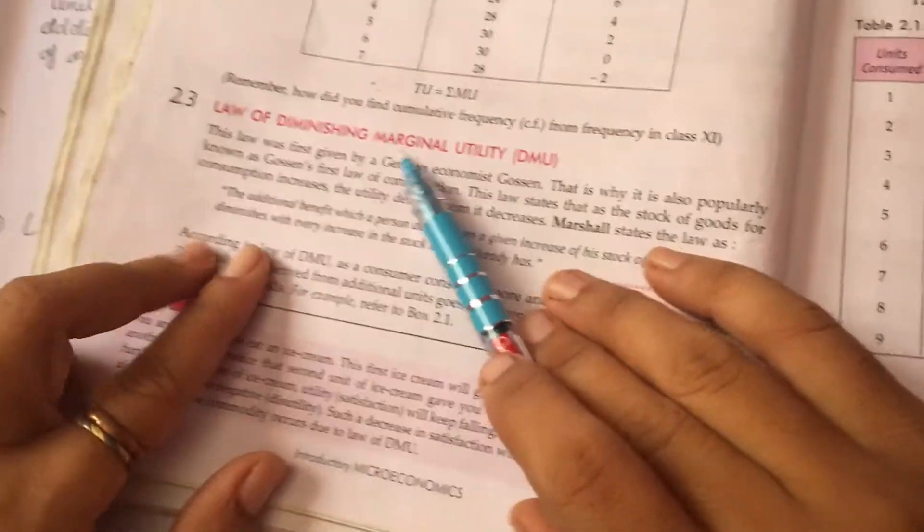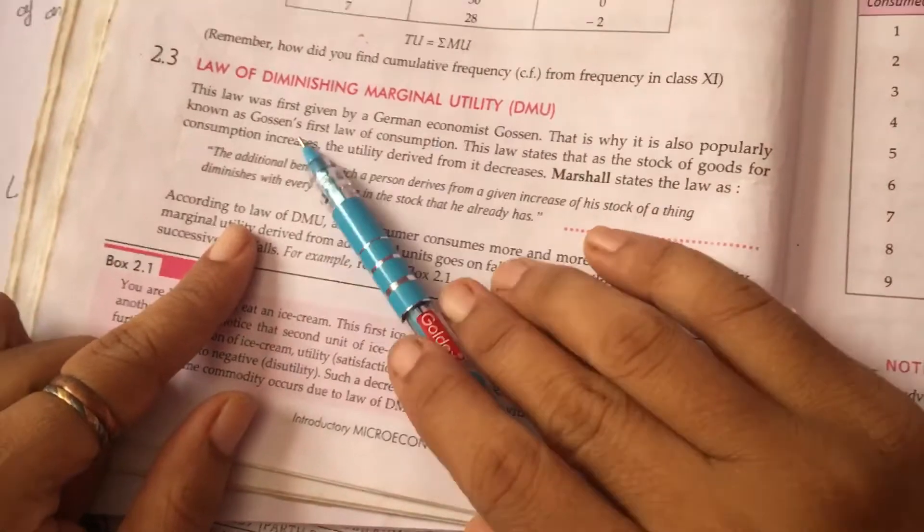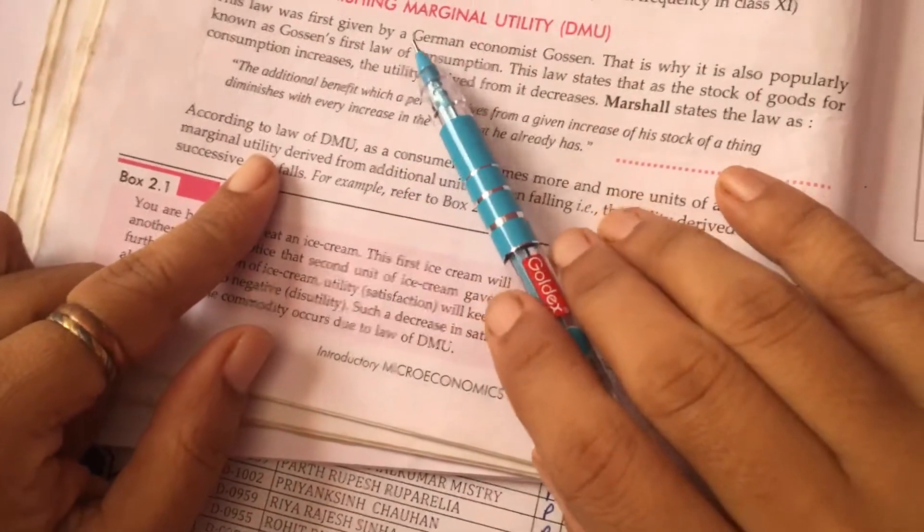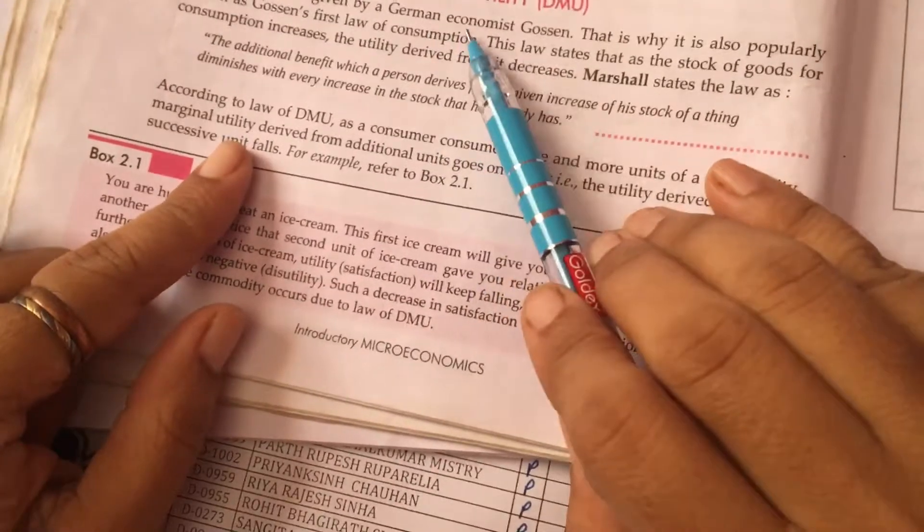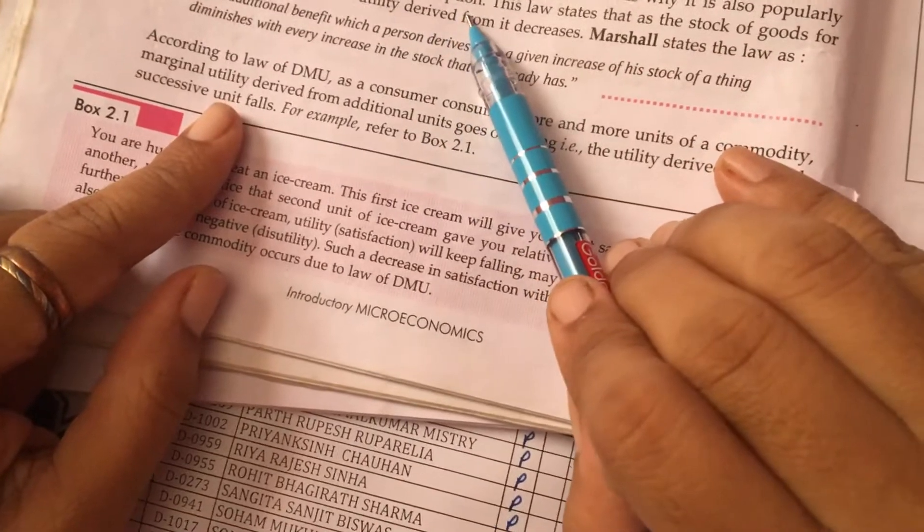Good morning children, this is the law of diminishing marginal utility. This is a very famous law. Why? Because this is the first law which was given by the German economist Gossen, and this law is regarding the law of consumption.